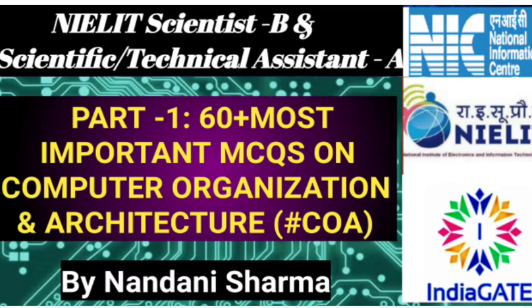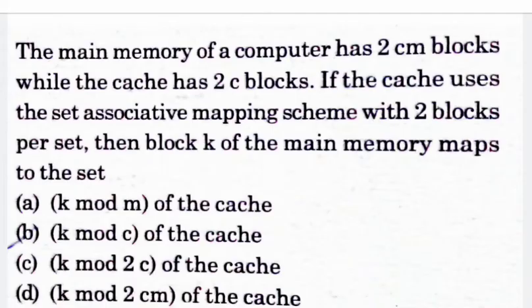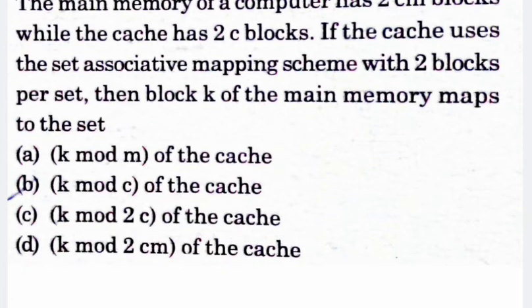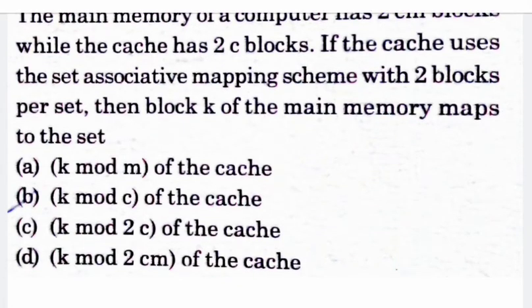Let's get started. First question: the main memory of a computer has 2^m blocks while the cache has 2^c blocks. If the cache uses the set-associative mapping scheme with two blocks per set, then the block k of the main memory maps to the set — four options: option A: k mod m of cache, option B: k mod c of cache, option C: c mod 2c of cache, option D: k mod 2cm of cache.